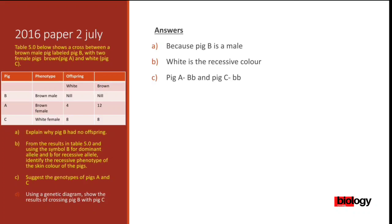For pig C, which is a white female: white is recessive, so there is no way this pig can have an allele for brown. If it had a brown allele it would appear brown, not white. White is only expressed when both alleles are recessive. Therefore the genotype for pig C is small b small b.